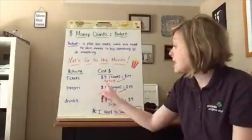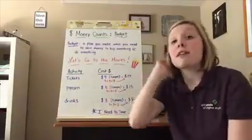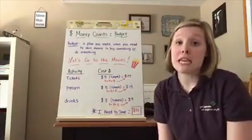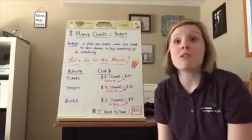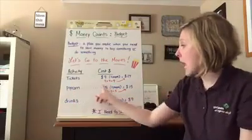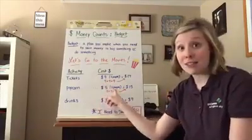So I did nine plus nine plus nine, and I figured out that it would cost $27 for tickets for us to go see a movie of our choice. Then we're each going to want some popcorn, and that costs five dollars each, and there's three of us. So that's five plus five plus five, that's $15 for popcorn.